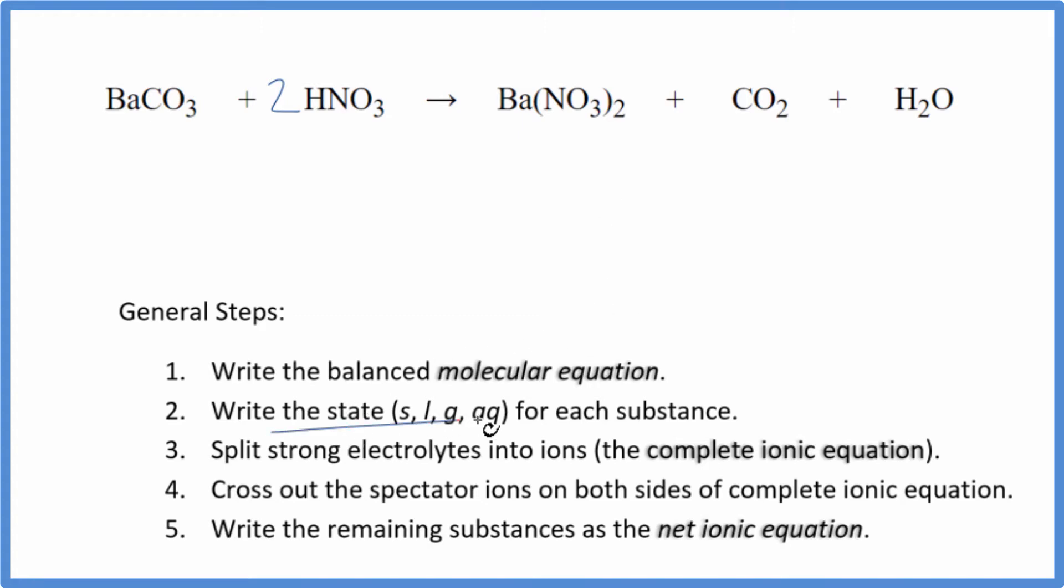Now we can write the states for each substance. When we look at barium carbonate, carbonates are often insoluble if you know your solubility rules. Barium carbonate is insoluble so it'll start out as a solid and we'll put it in this nitric acid. Nitric acid is a strong acid so it's a strong electrolyte. It dissociates into its ions here. I'm going to write aqueous because it's going to dissolve and dissociate. Nitrates are very soluble, aqueous, and then carbon dioxide is a gas and water is a liquid. So we have the states.